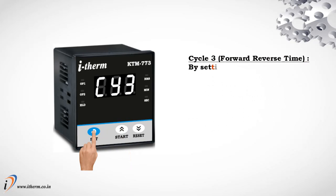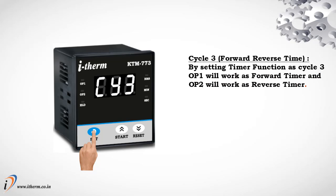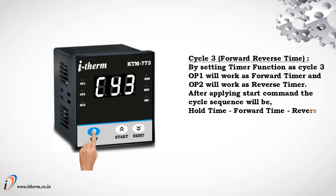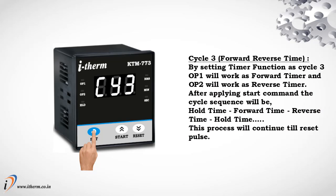Cycle 3, forward reverse time. By setting timer function as cycle 3, output 1 will work as forward timer and output 2 will work as reverse timer. After applying start command, the cycle sequence will be: hold time, forward time, reverse time, hold time. This process will continue till reset pulse.